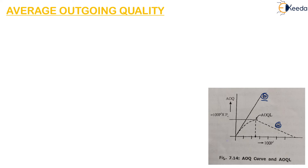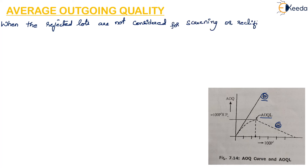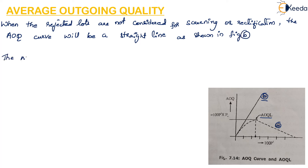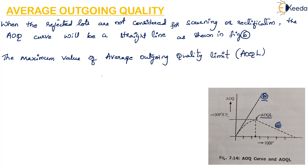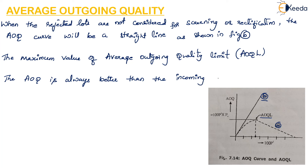The maximum value of the Average Outgoing Quality is called the Average Outgoing Quality Limit (AOQL). From the figure, this is AOQL — the maximum value of AOQ. The average outgoing quality is always better than the incoming quality because rejected lots are rectified by screening.